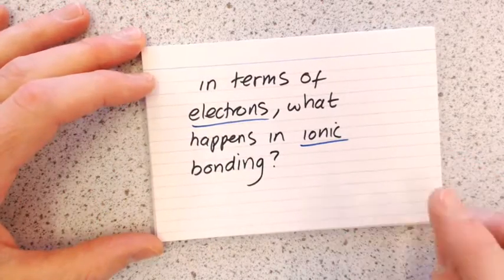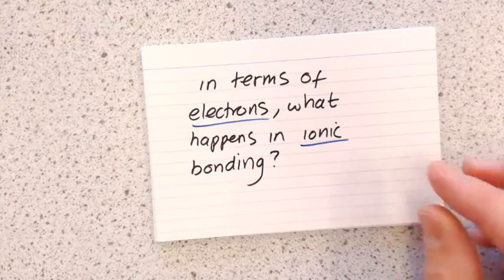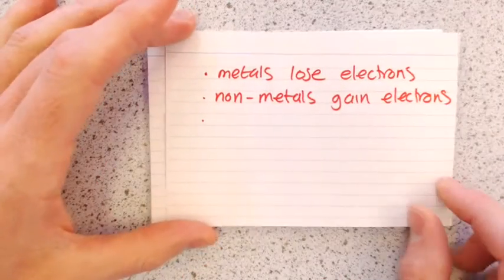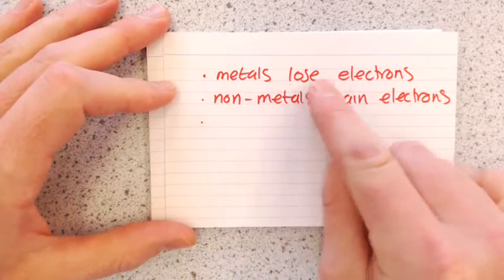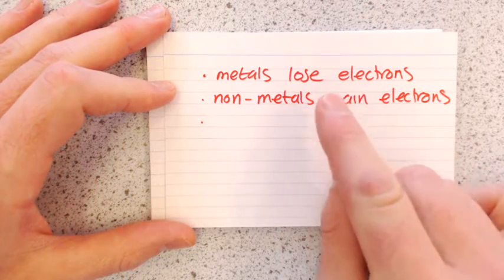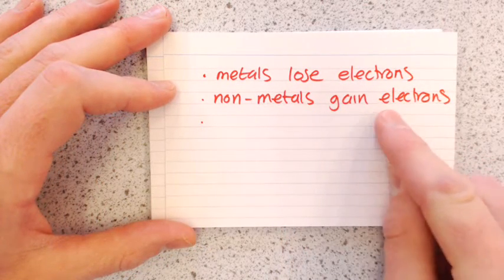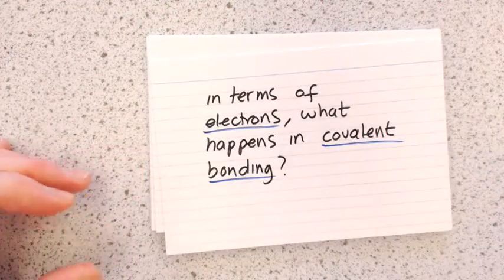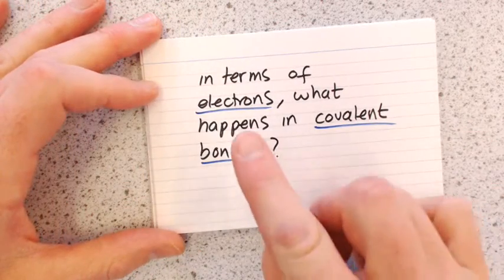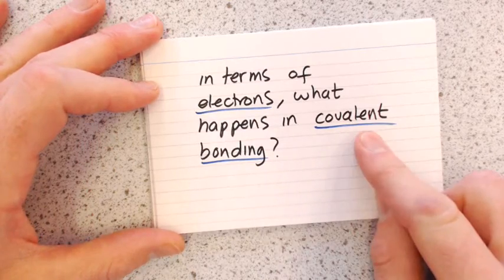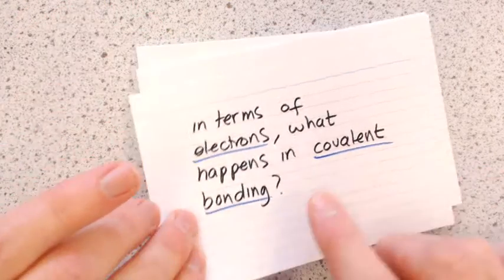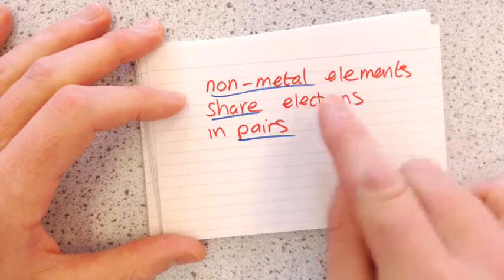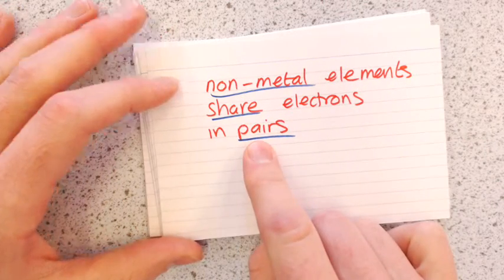In terms of electrons, what happens during ionic bonding? The metals are going to lose electrons, and the non-metals are going to gain electrons. In terms of electrons, what happens in covalent bonding? The non-metal elements are going to share electrons.